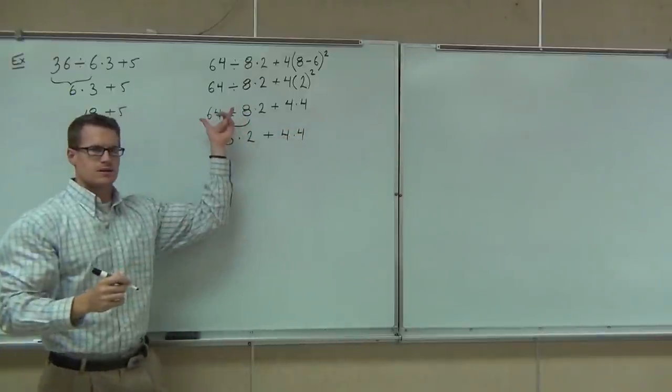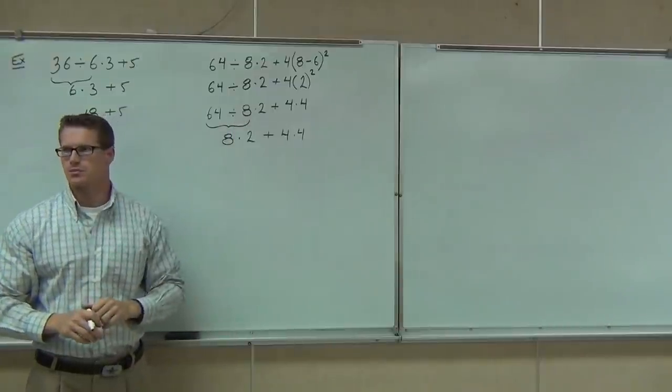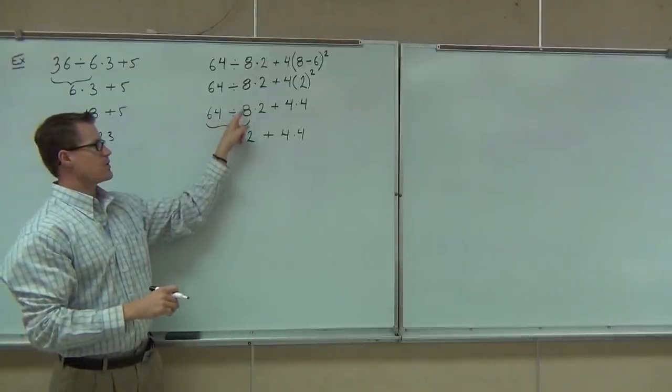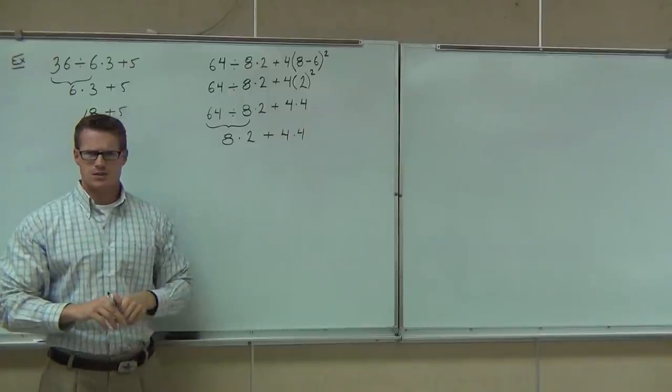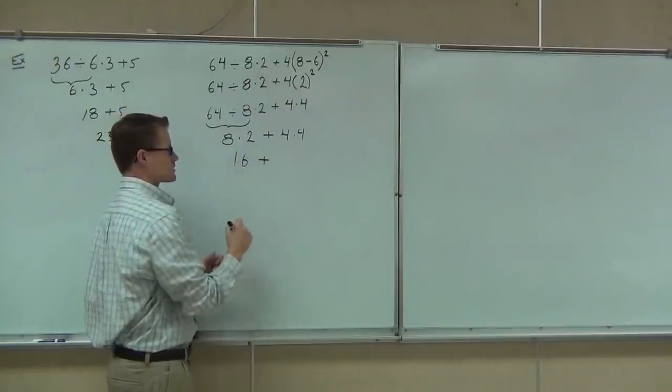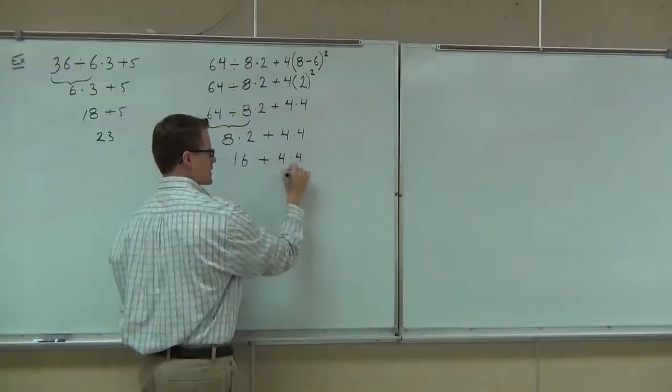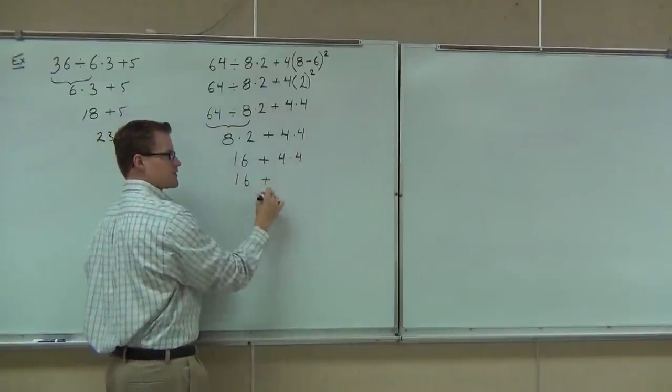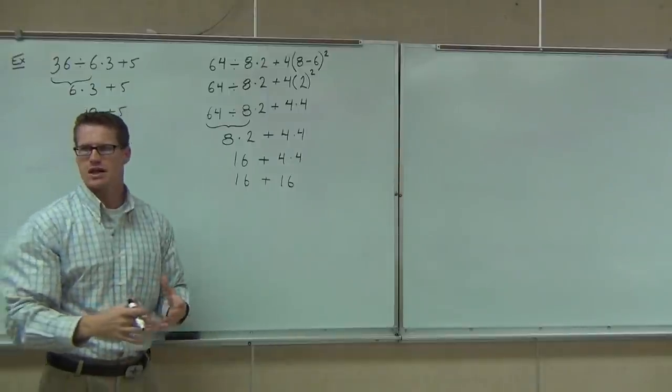As long as we're doing the 64 divided by 8 before the 8 times 2. That's the important part. So notice that the 64 divided by 8 gives us 8. And then we still have the times 2. 8 times 2? Plus, we have some more multiplication. We'll take care of that in just a second. We've got 16 plus the 4 times 4 gives us another 16. And lastly, when we add those two pieces together, we get...